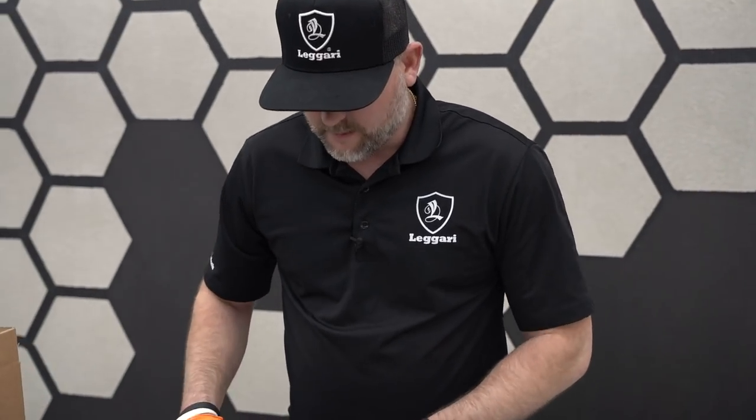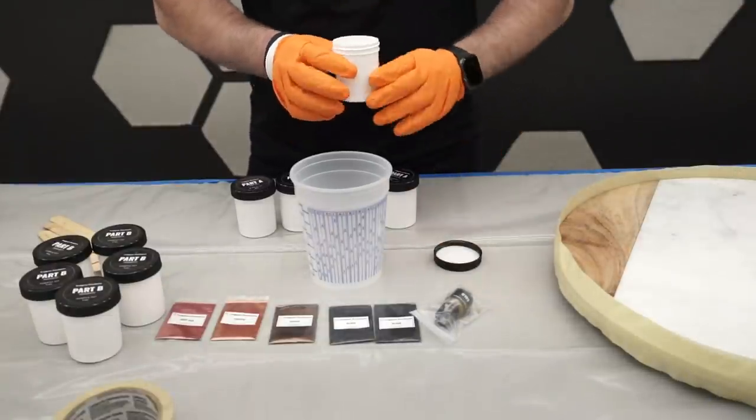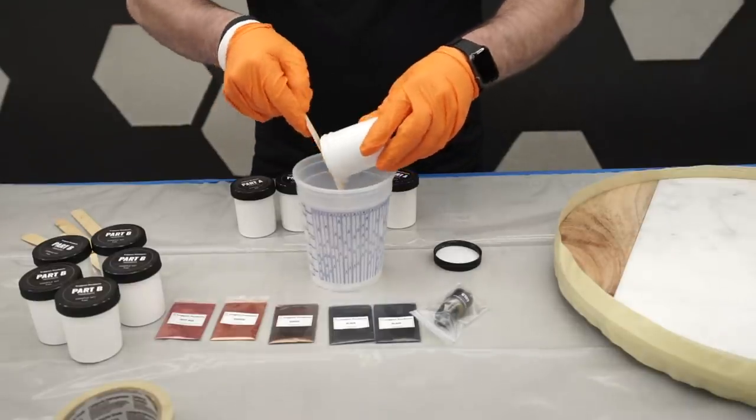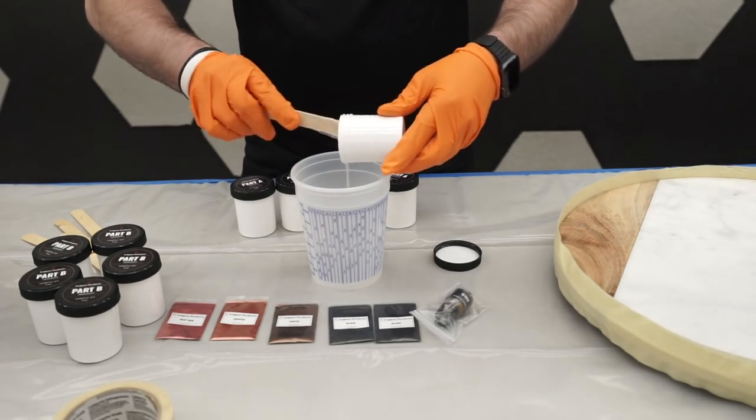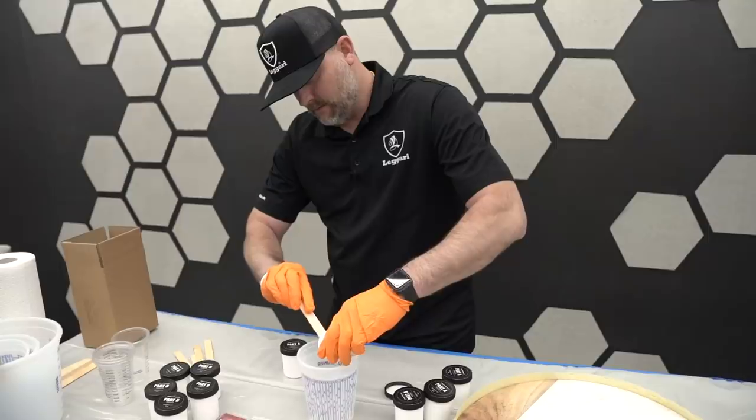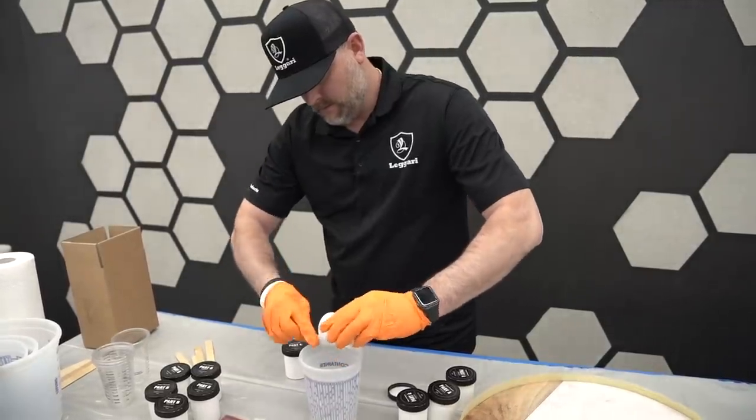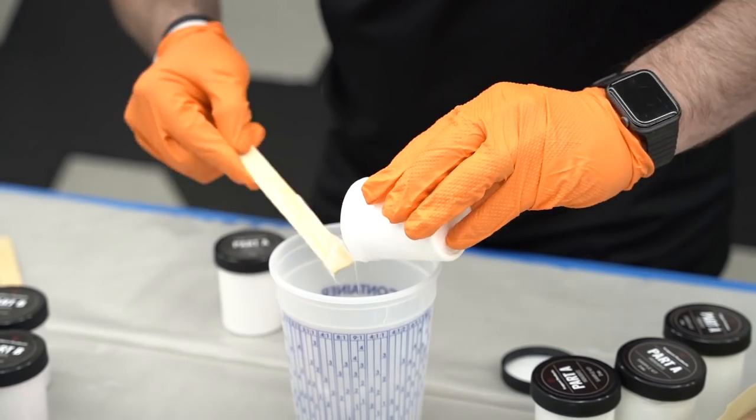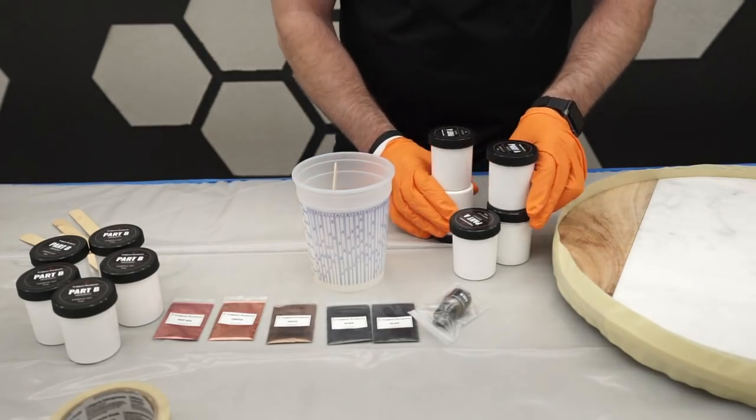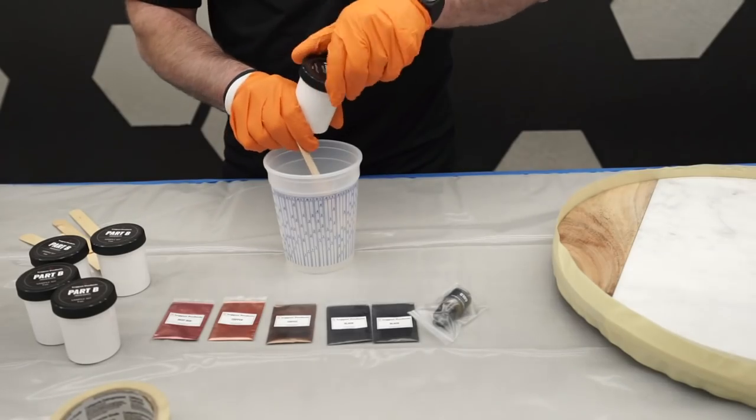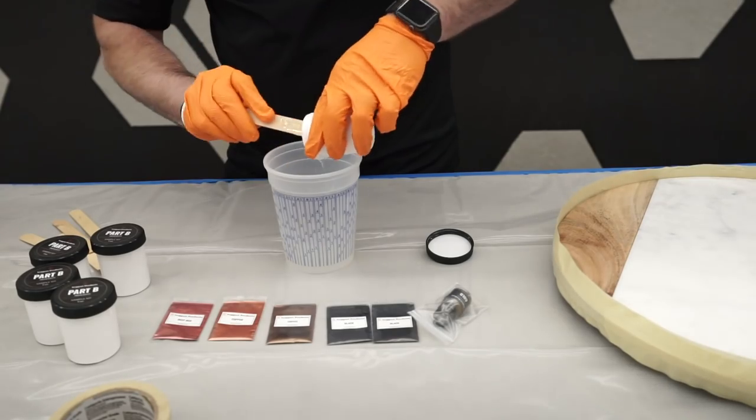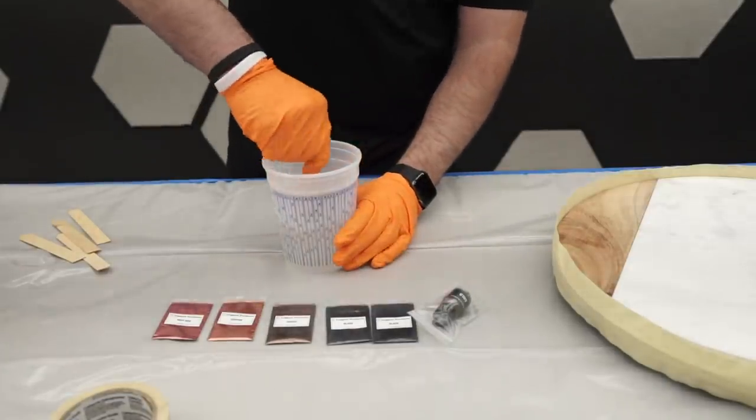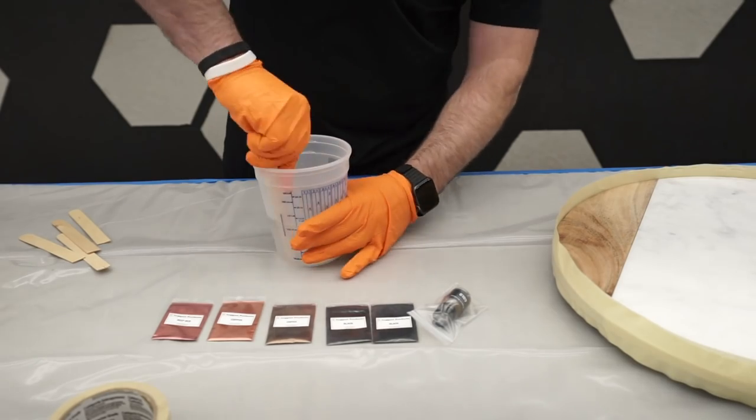So we're going to pour all the part A's in first. And we want to just make sure we get as much of that out as we can. So we're going to scrape the sides, scrape the bottom here. All right, there's our part A's. All right, now we're going to mix this for two to three minutes. Make sure you scrape the sides, scrape the bottom.